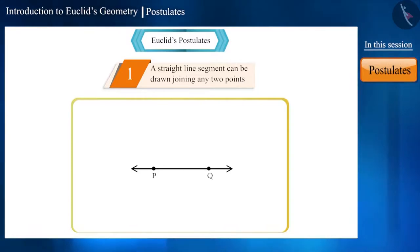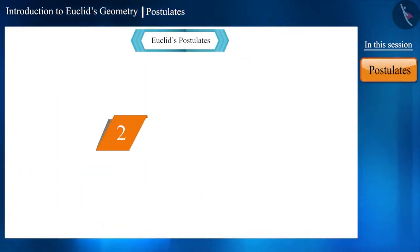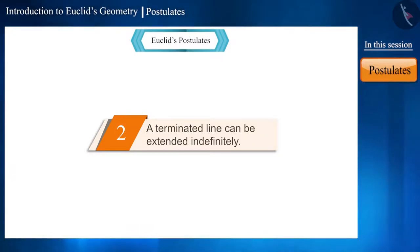And even if we try to draw another straight line it is not possible. If we draw it, it will not be a straight line but a curve. Euclid has shown this postulate in many of his works.